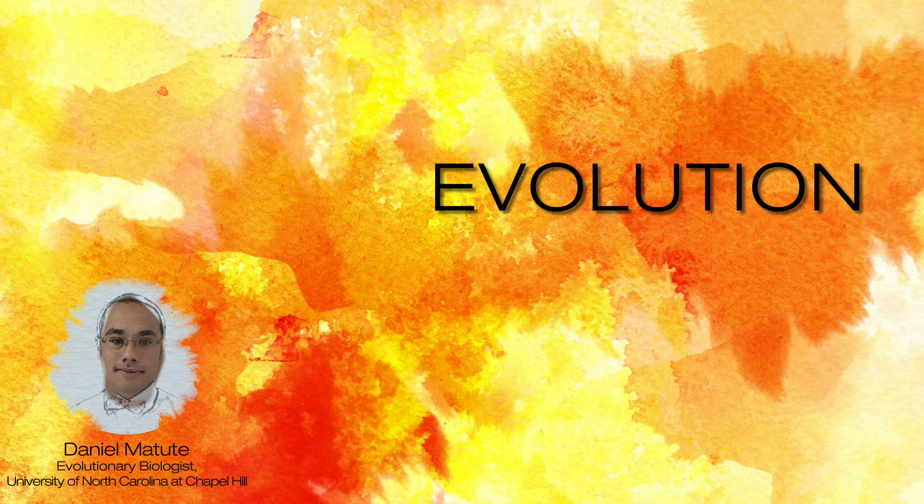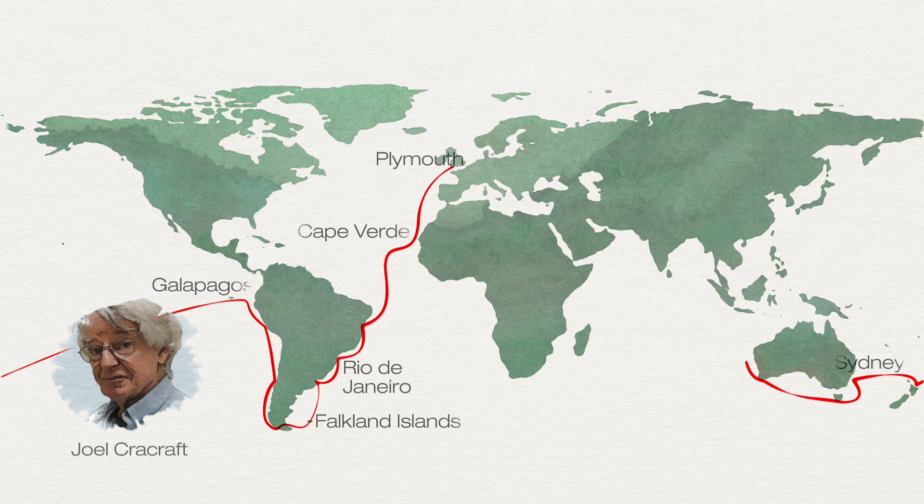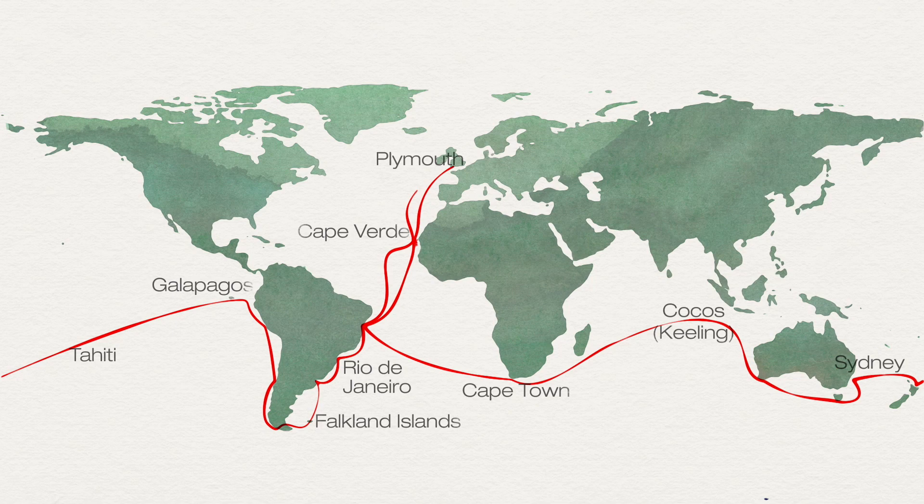Evolution essentially multiplies majesty by majesty by majesty. And our understanding of all that majesty goes back to the mid-1800s, when an English 20-something, a guy named Charles Darwin, got an invitation he couldn't refuse — to travel around the world for five years. That voyage made him into a thinker. He was just a great naturalist. He saw things in nature and he asked why.